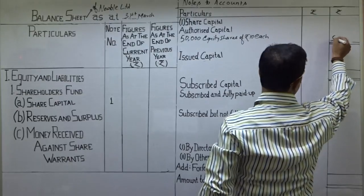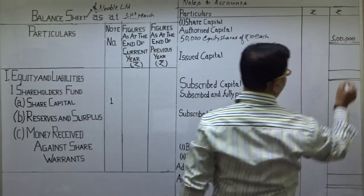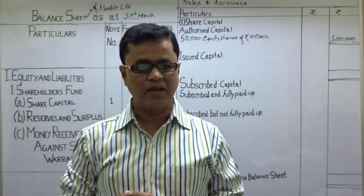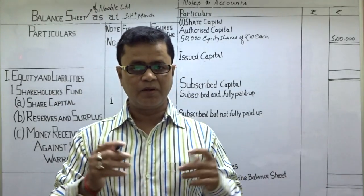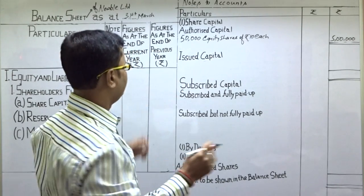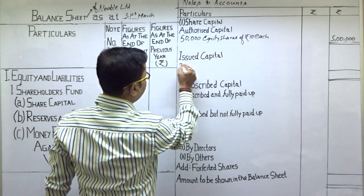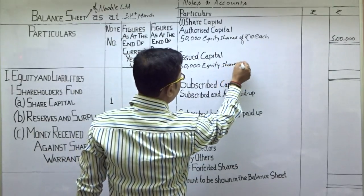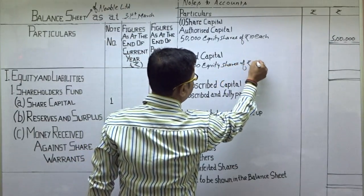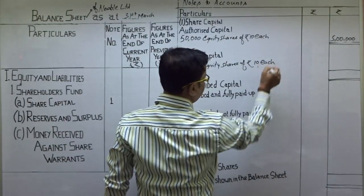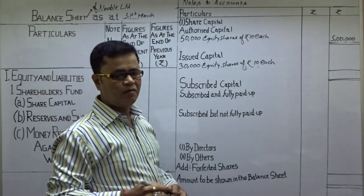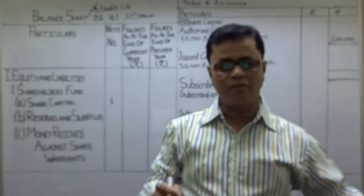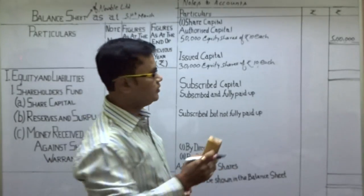कंपनी ने offer किया 30,000 equity shares of ₹10 each को public में। Issued capital में 30,000 equity shares आ गए। 30,000 shares × ₹10 each = कंपनी के पास total issued capital ₹3,00,000 हो गई।